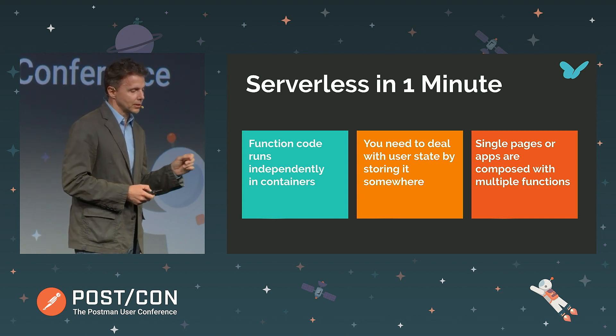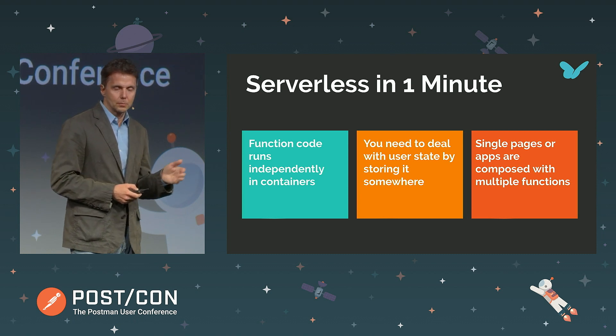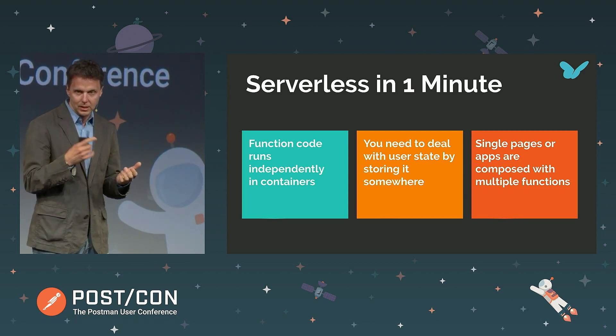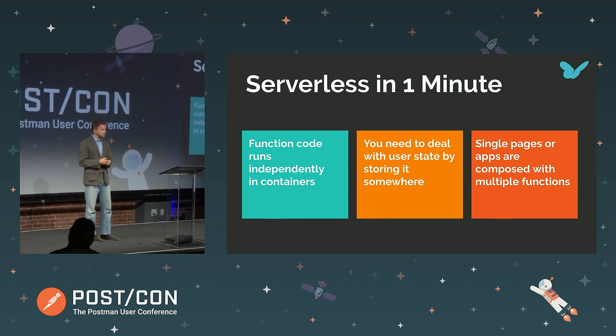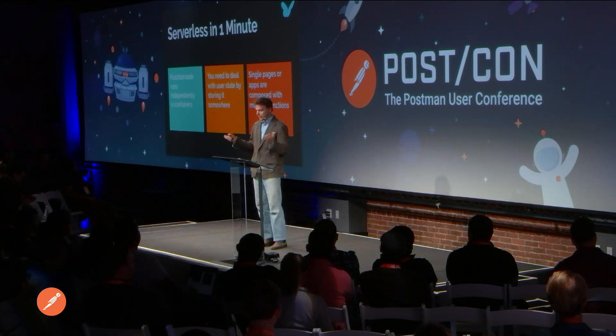Because these functions are ephemeral — they live for a short time and go away — you need to deal with user state. Unlike a server process where you'd keep state in a global variable, in serverless your code runs and completely goes away, using no resources. So normally you keep state somewhere, like DynamoDB on Amazon, or a key-value store. With serverless, if you're writing a React app, you may have multiple graphs and buttons on screen, each being different functions executing independently. A single web page can be composed of multiple API calls, which are function calls.